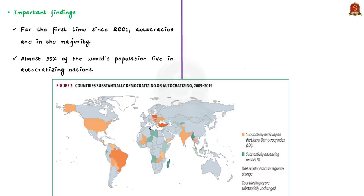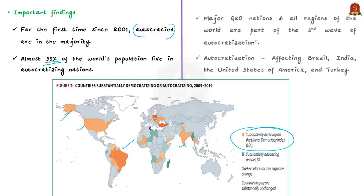Some other significant findings of the report: for the first time since 2001, autocracies are in majority in the world — around 92 countries, home to 54% of the global population, are autocracies. Almost 35% of the world's population live in autocratizing nations. Major G20 nations and all regions of the world are part of the third wave of autocratization, affecting countries including Brazil, India, USA, and Turkey.